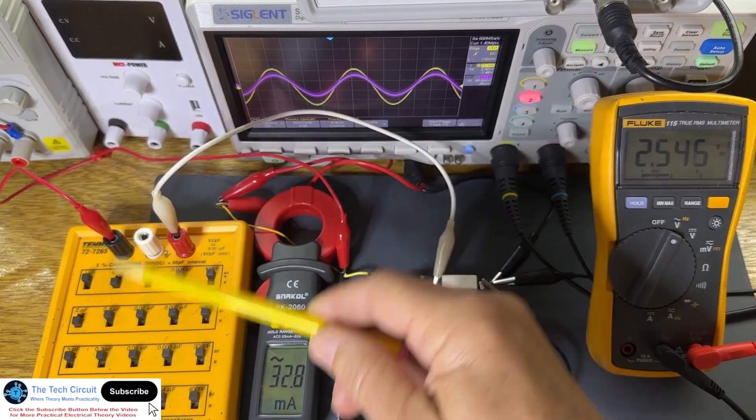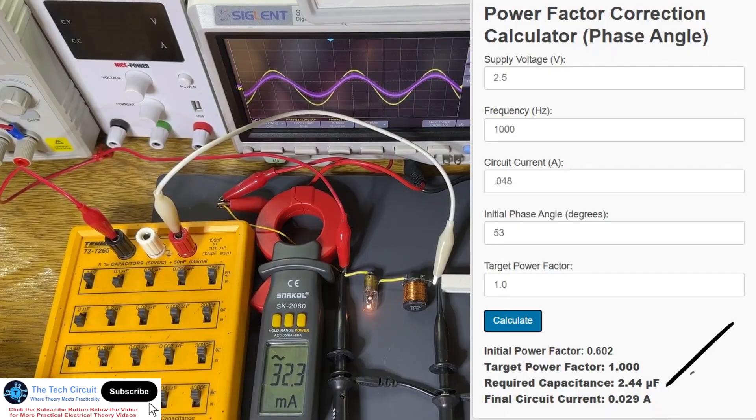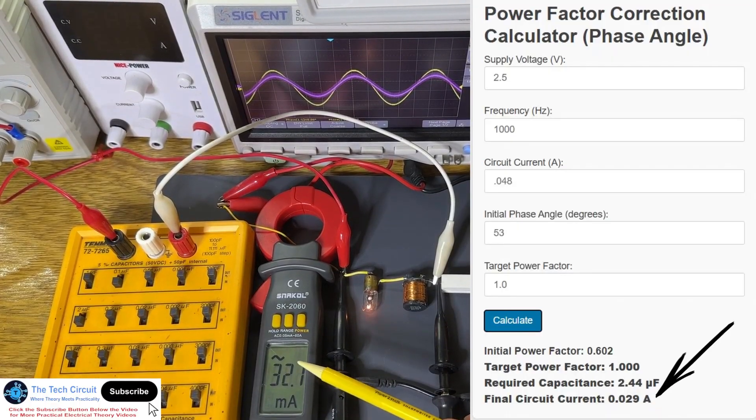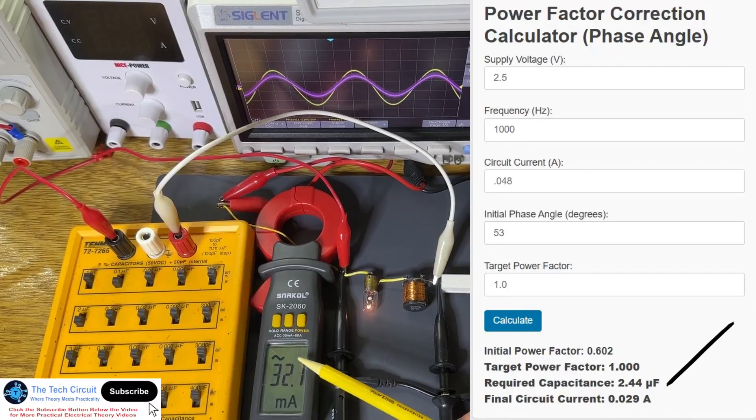Also look at the current. It has dropped down to just about the level that our calculator predicted. Only 60 percent of the original current, as a matter of fact, with the same amount of power being delivered to our light bulb.